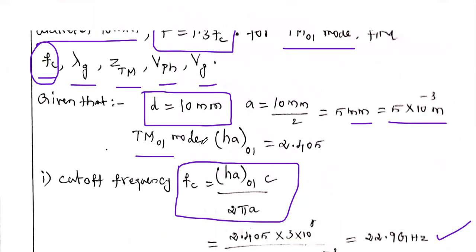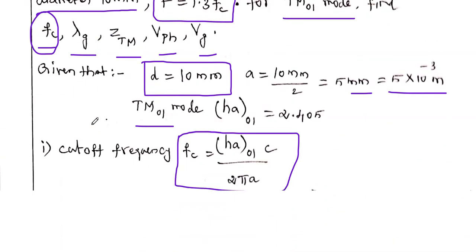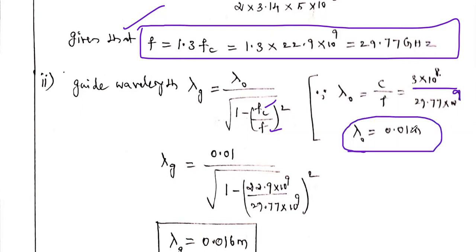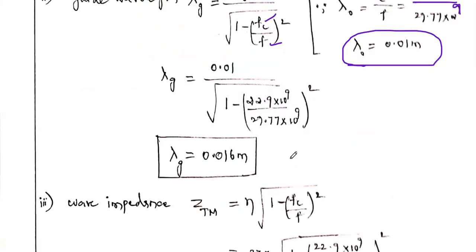Next, find guide wavelength λg. The formula is λg = λ₀ / √(1 − (Fc/f)²). First, λ₀ = C/f = (3×10^8) / (29.77×10^9) = 0.01 m. Substituting λ₀, Fc, and f into the guide wavelength formula gives λg = 0.016 m, or 1.6 centimeters.